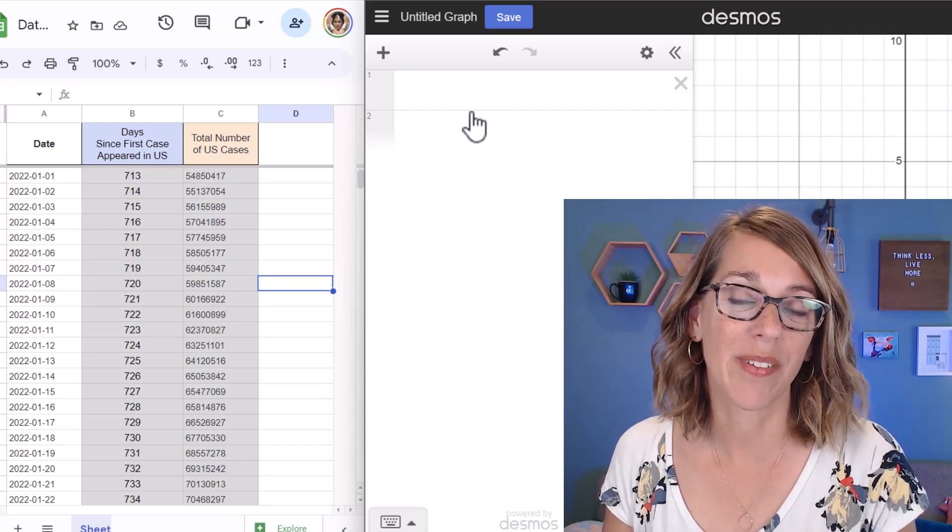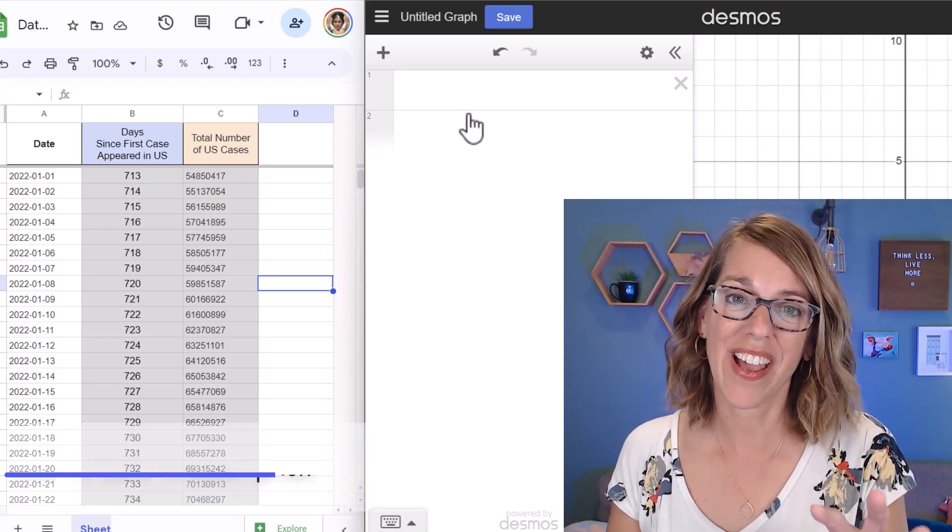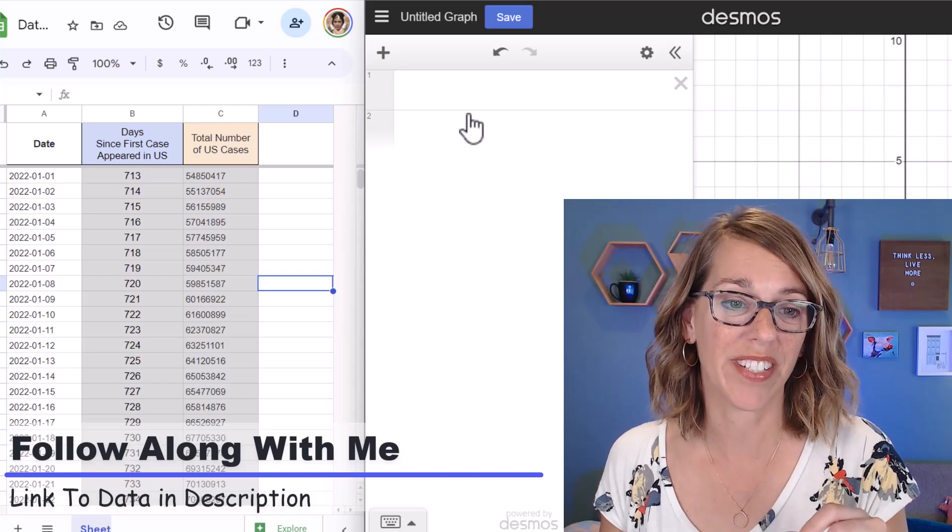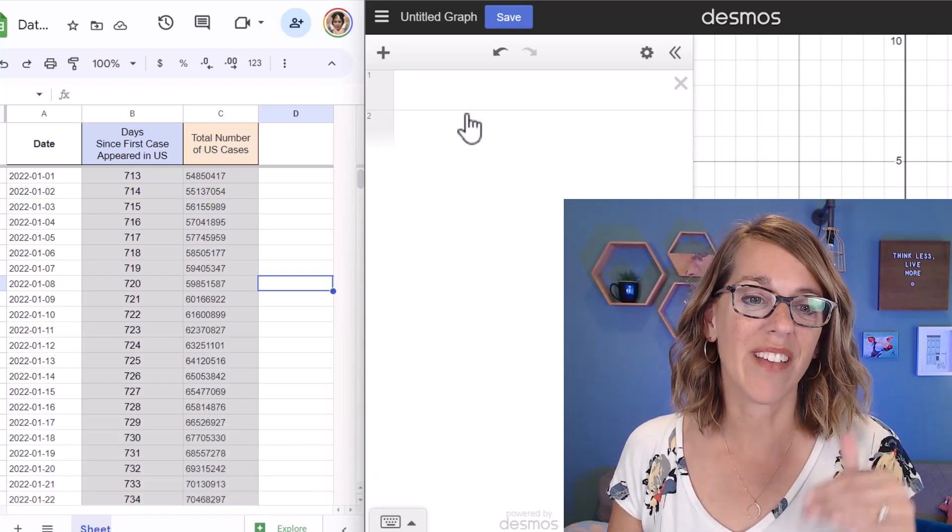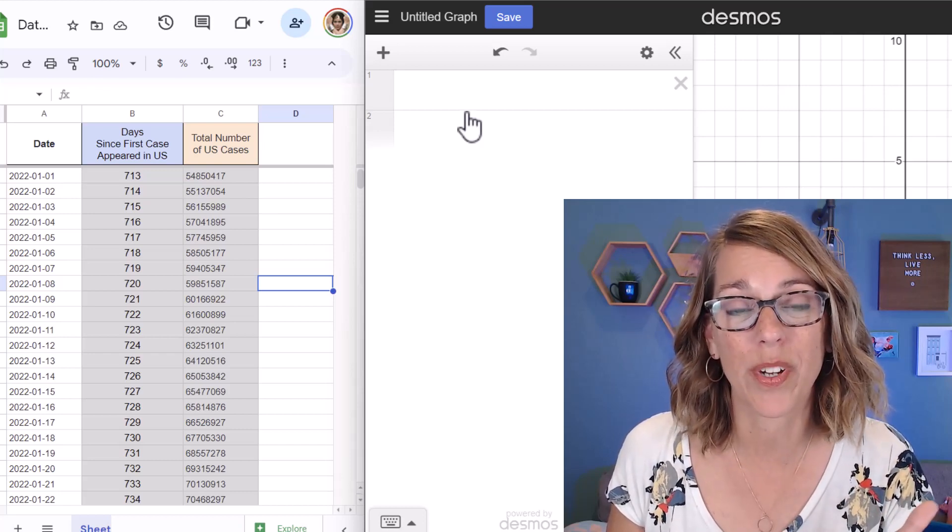Let's do a linear regression line with some data. The data that I've got here is some coronavirus data, and I've got days since the first case appeared and I've got the total number of cases. This happens to be January 2022.